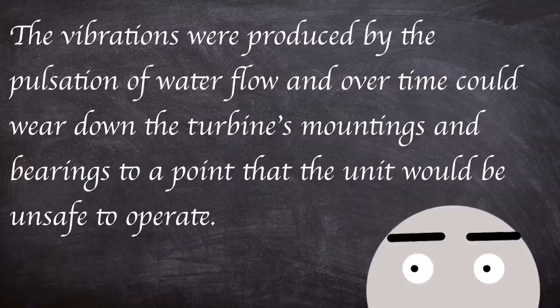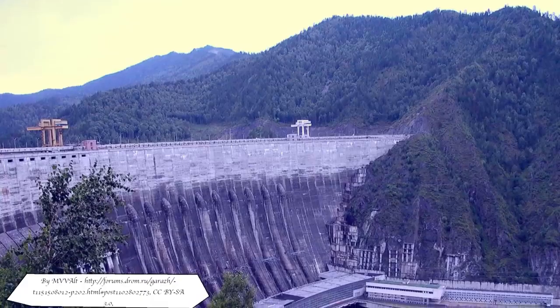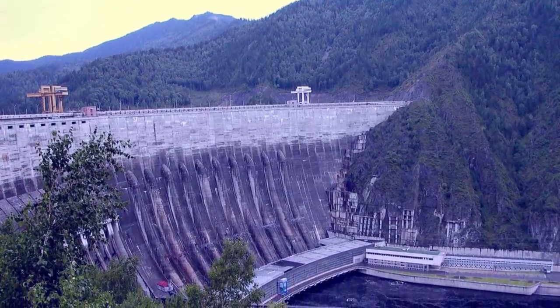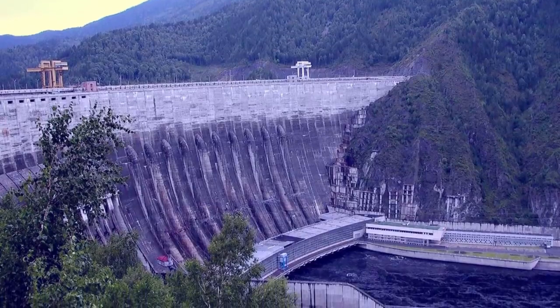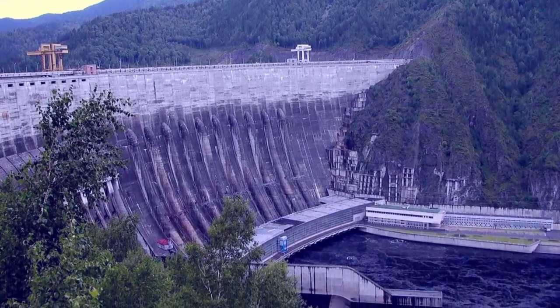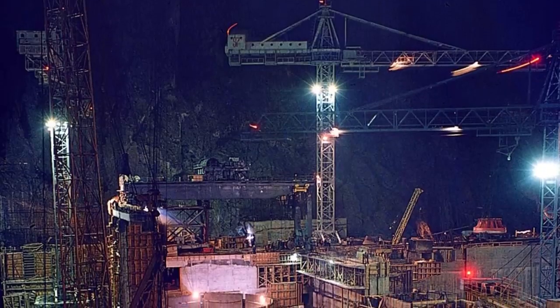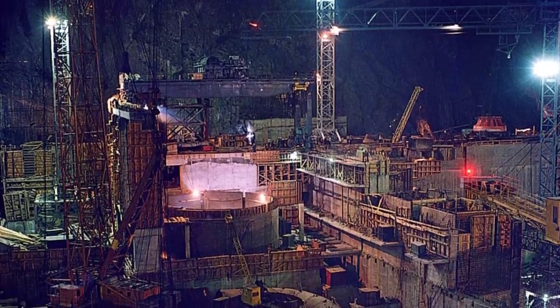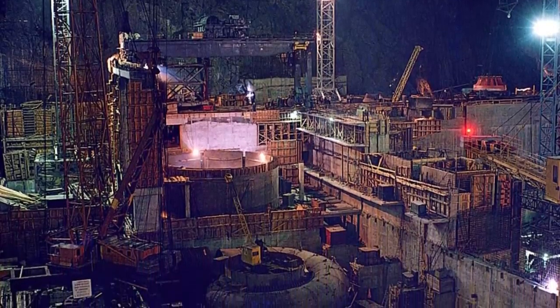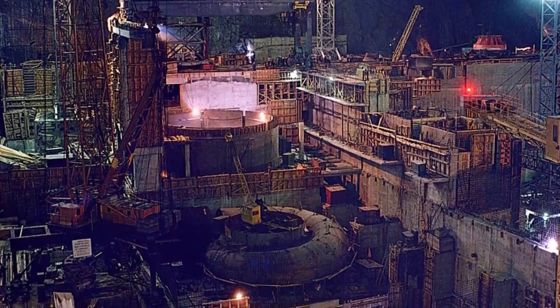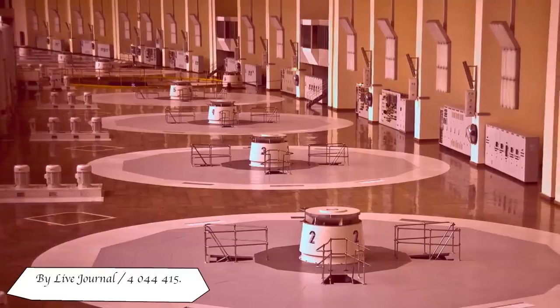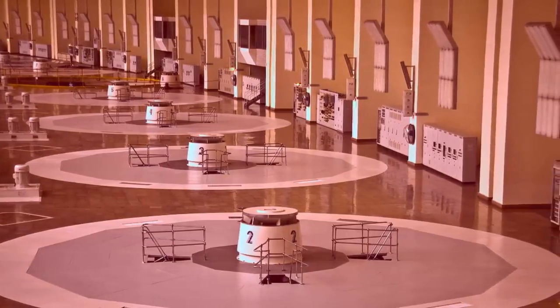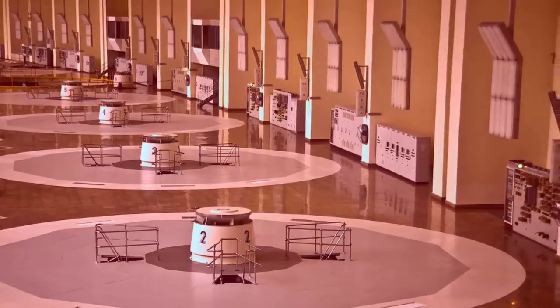The vibrations were produced by the pulsation of the water flow and over time could wear down the turbine's mountings and bearings to a point that the unit would be unsafe to operate. The hydroelectric plant's lifetime has been mired with various issues. Many of the turbines experienced seal, vibration, and bearing issues, as well as several floods. Turbine 2 had its fair share of issues ever since its installation in 1979. This particular unit had seemed to have taken a lot of the brunt of the extreme forces put upon it during its operating life. As such, by the early 2000s it was showing its age with cracks in the turbine runner, and issues with bearings were also highlighted and replaced.